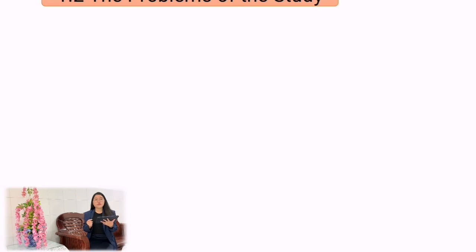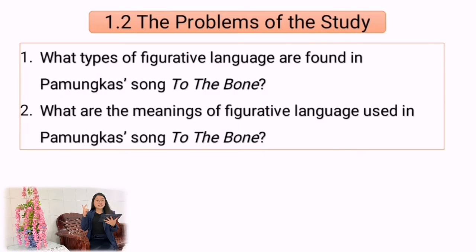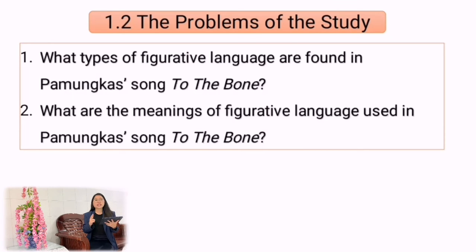Moving on to the problems of the study, I will pick two problems. The first is: what types of figurative language are found in Pamukka's song 'To the Bone'? In this case, I am going to identify the types of figurative language involved in the song. The second is: what are the meanings of the figurative language used in Pamukka's song 'To the Bone'? I will also identify and explain the meanings of the figurative language involved in the song.